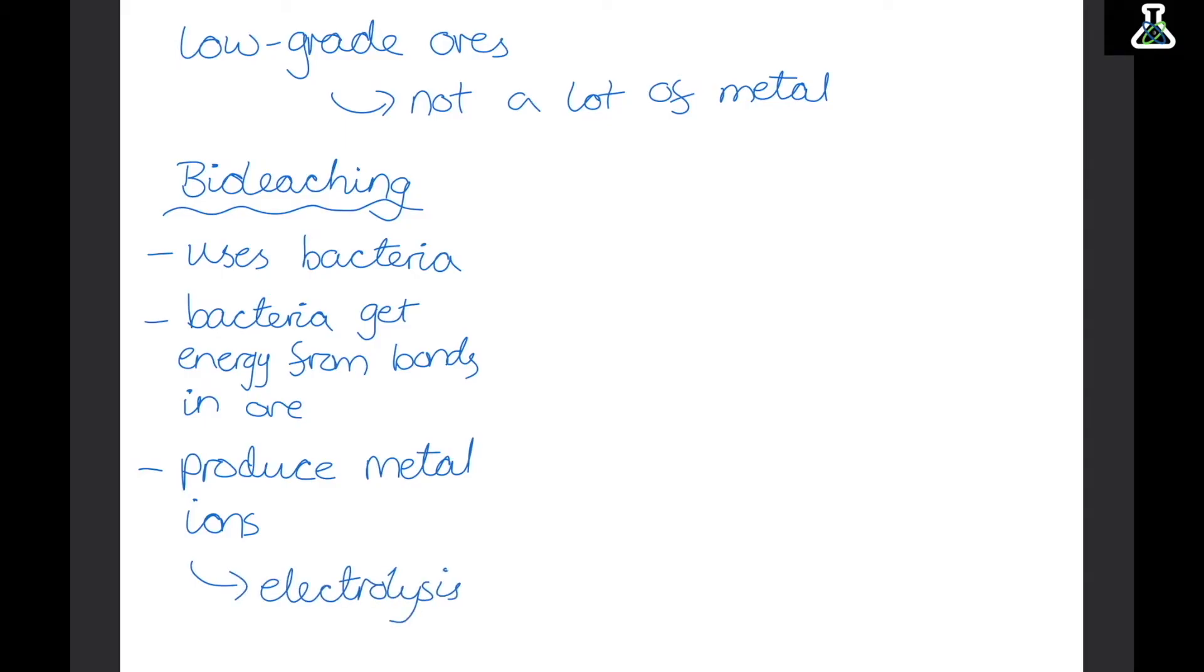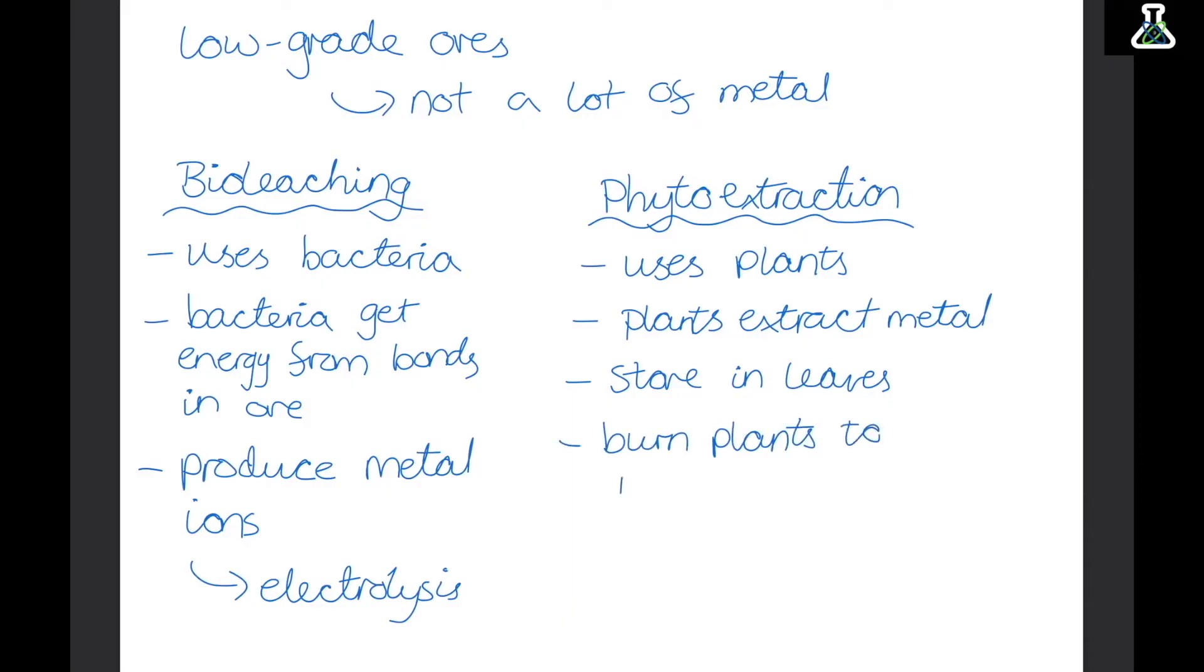Then the second way is by phytoextraction. And this uses plants. Plants extract metal from the soil using their roots. And then they can't really do anything with this metal so they store it in their leaves. So eventually over time this builds up and then we can burn the plants to produce the metal.